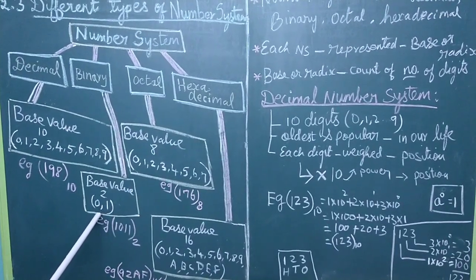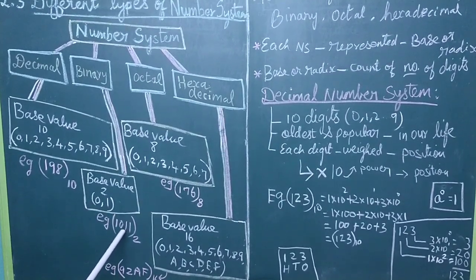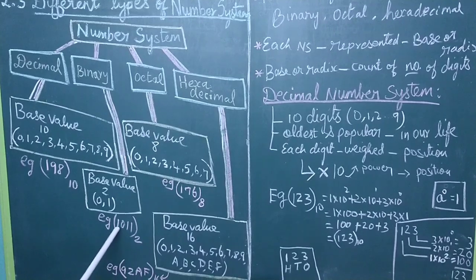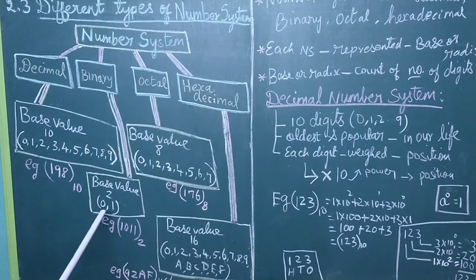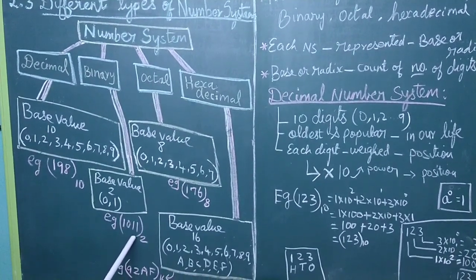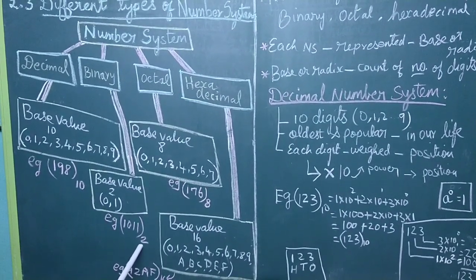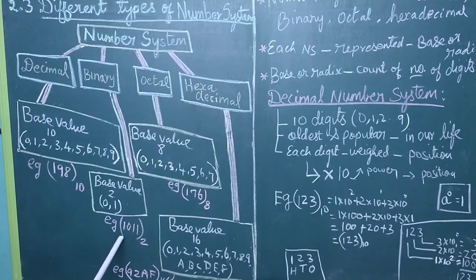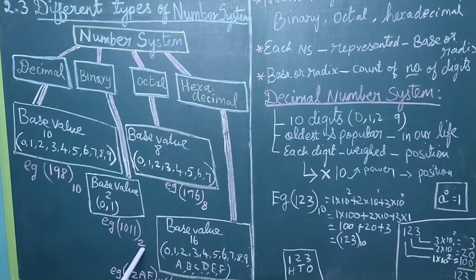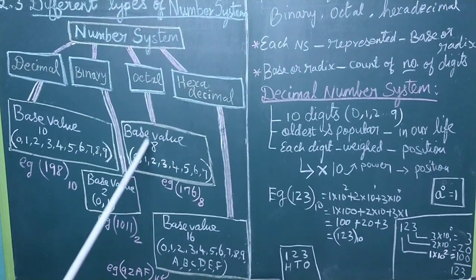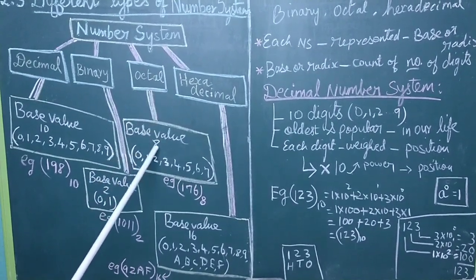In the binary number system, only 0 and 1 are used, so the base value is 2. For example, a binary number like 1011 can be combined. So our base value is 2.